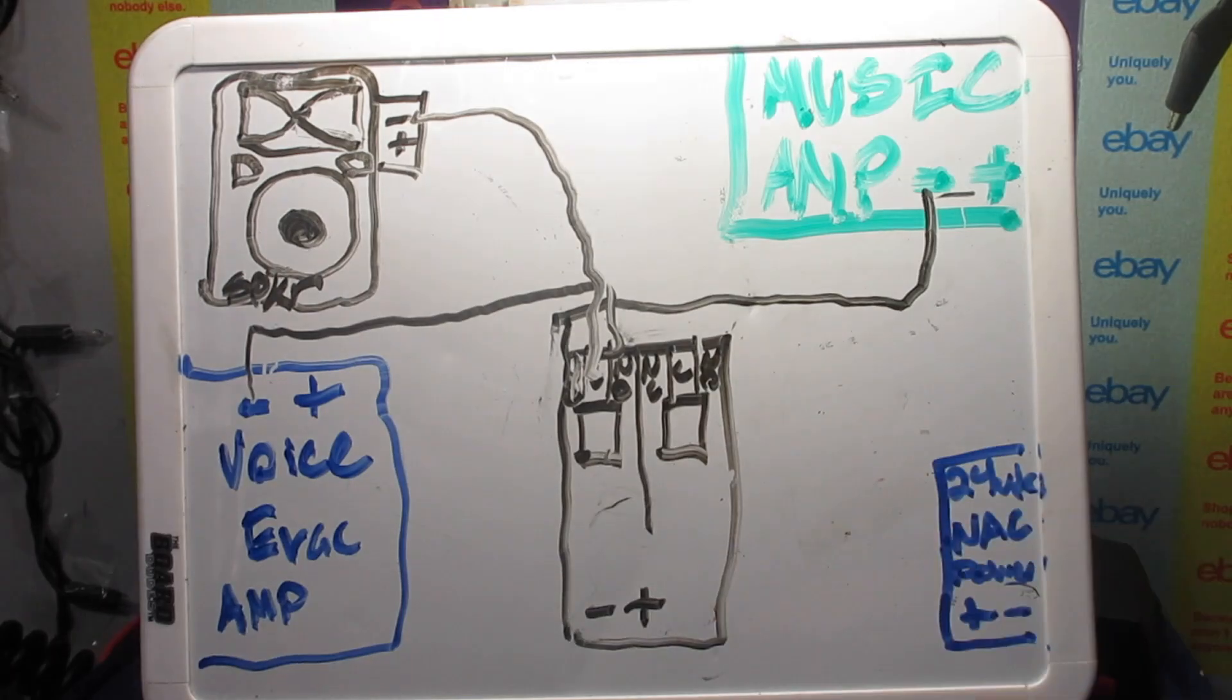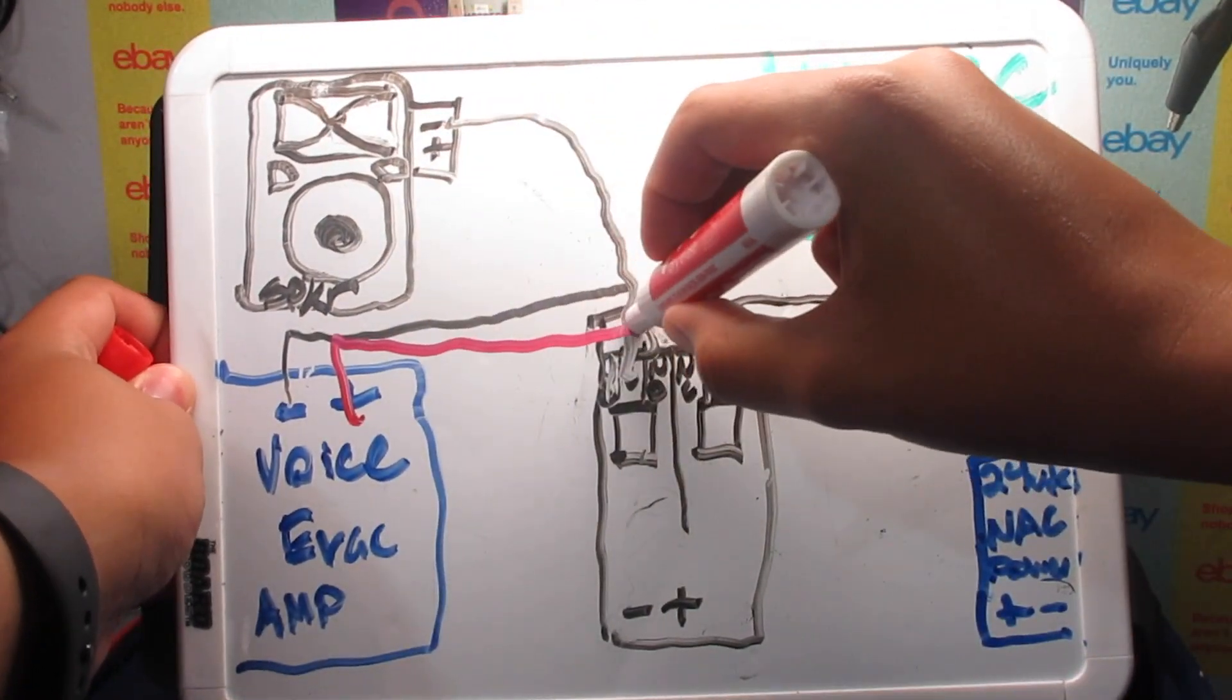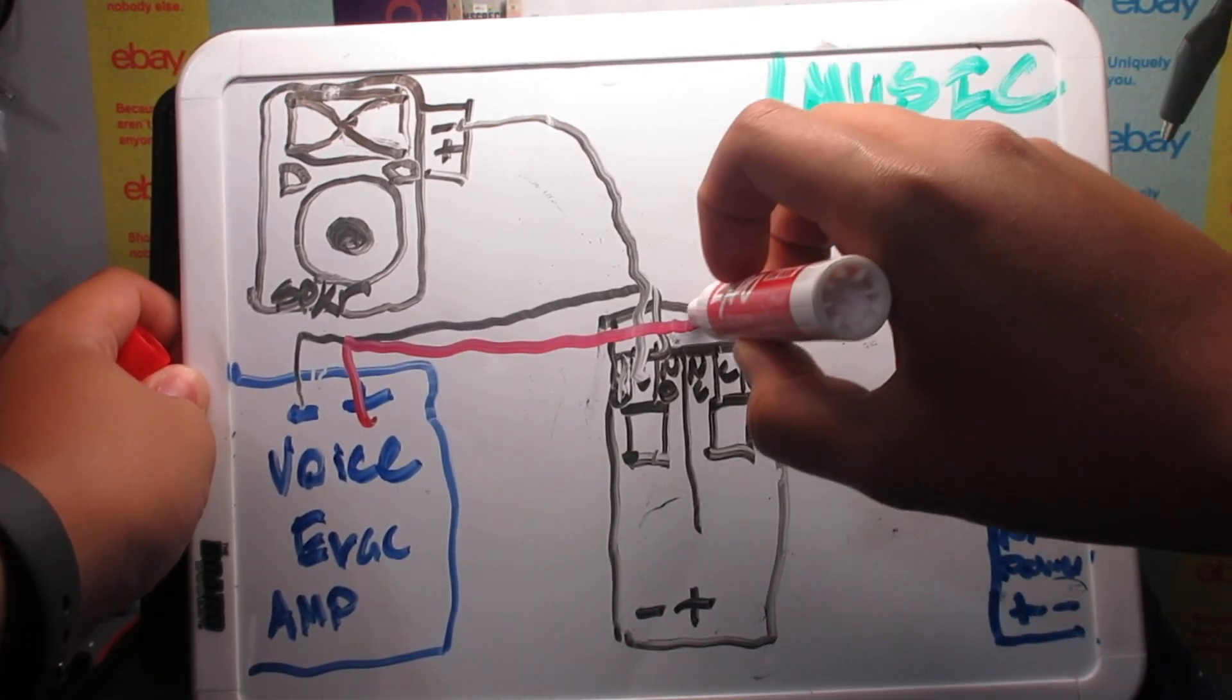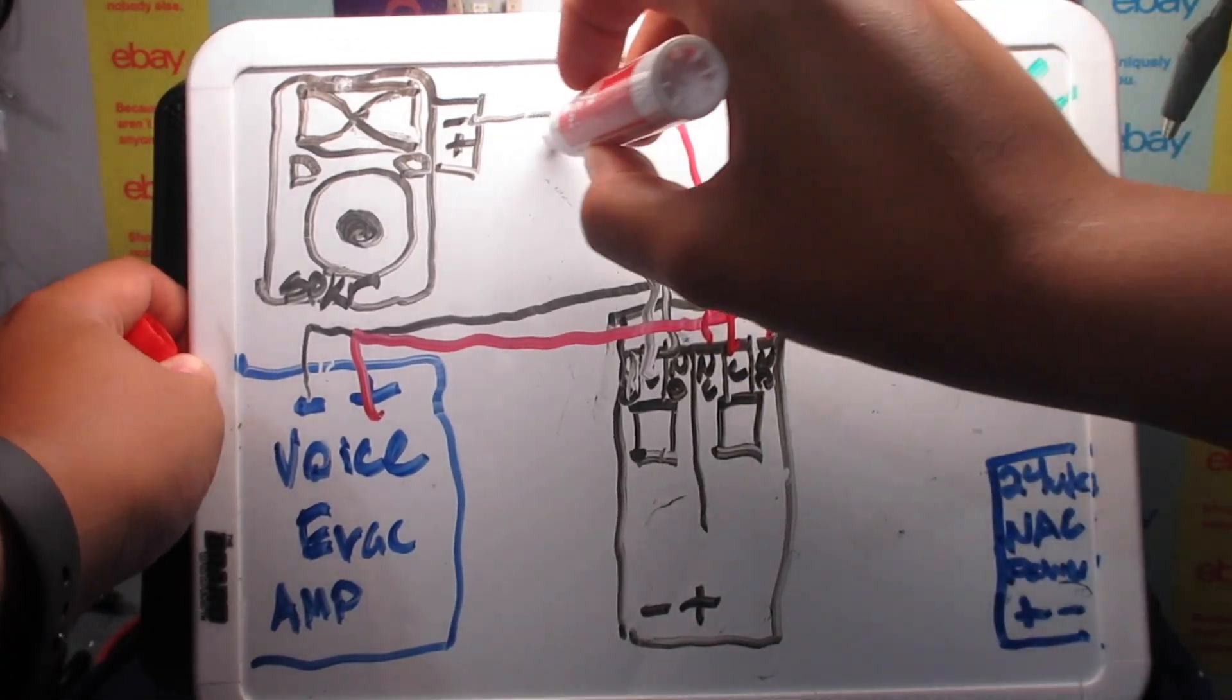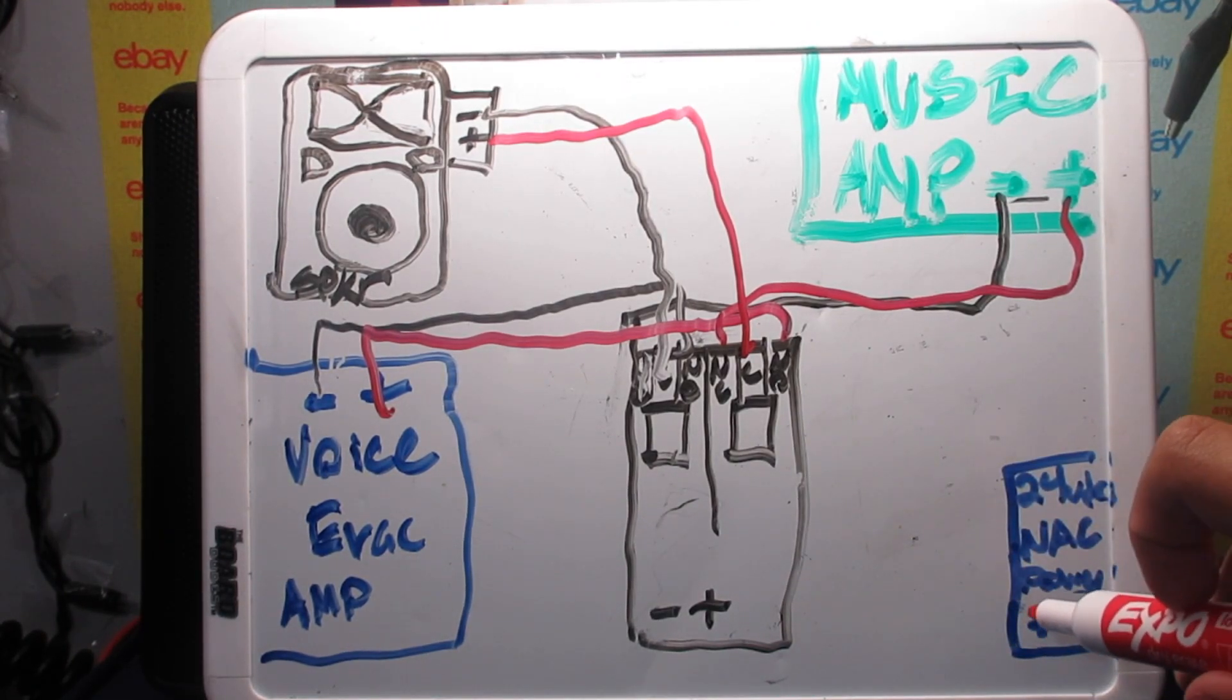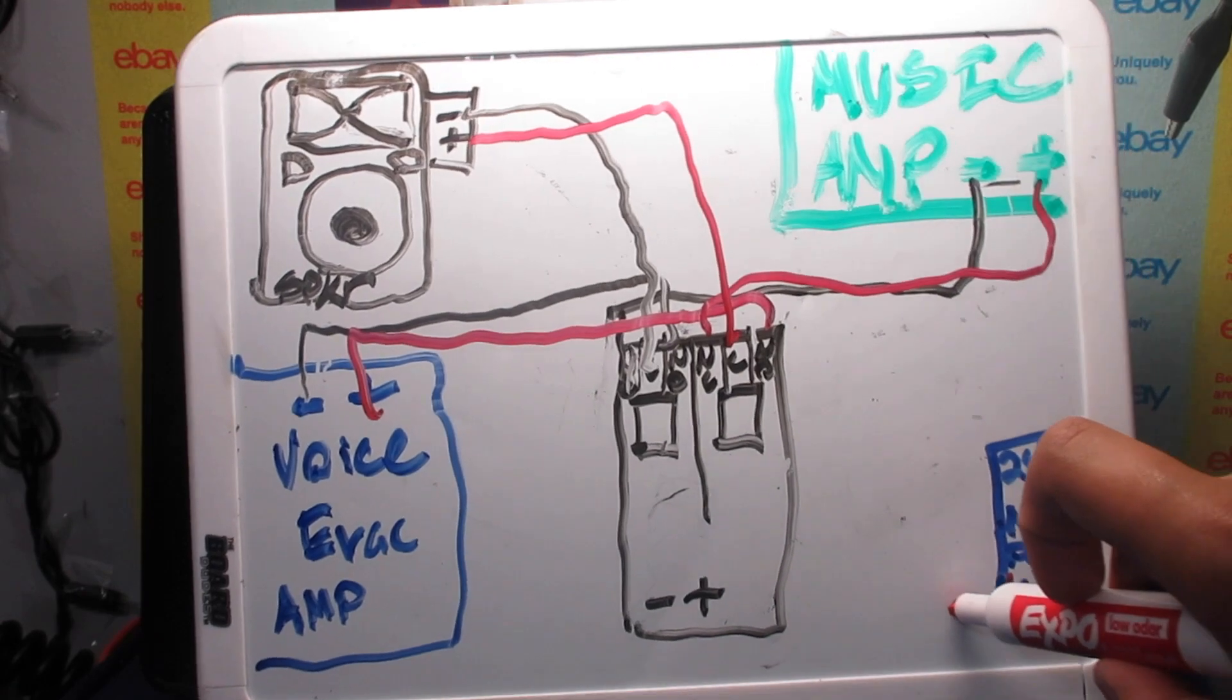So then we're going to do the same thing with our positives. Take our voice evac and put it onto the normally open, take our amp, put it onto the normally closed, and take the common and put it onto the speaker. Now what we need to do is hook it up to our alarm panel, which will be a notification appliance circuit or some sort of control module.